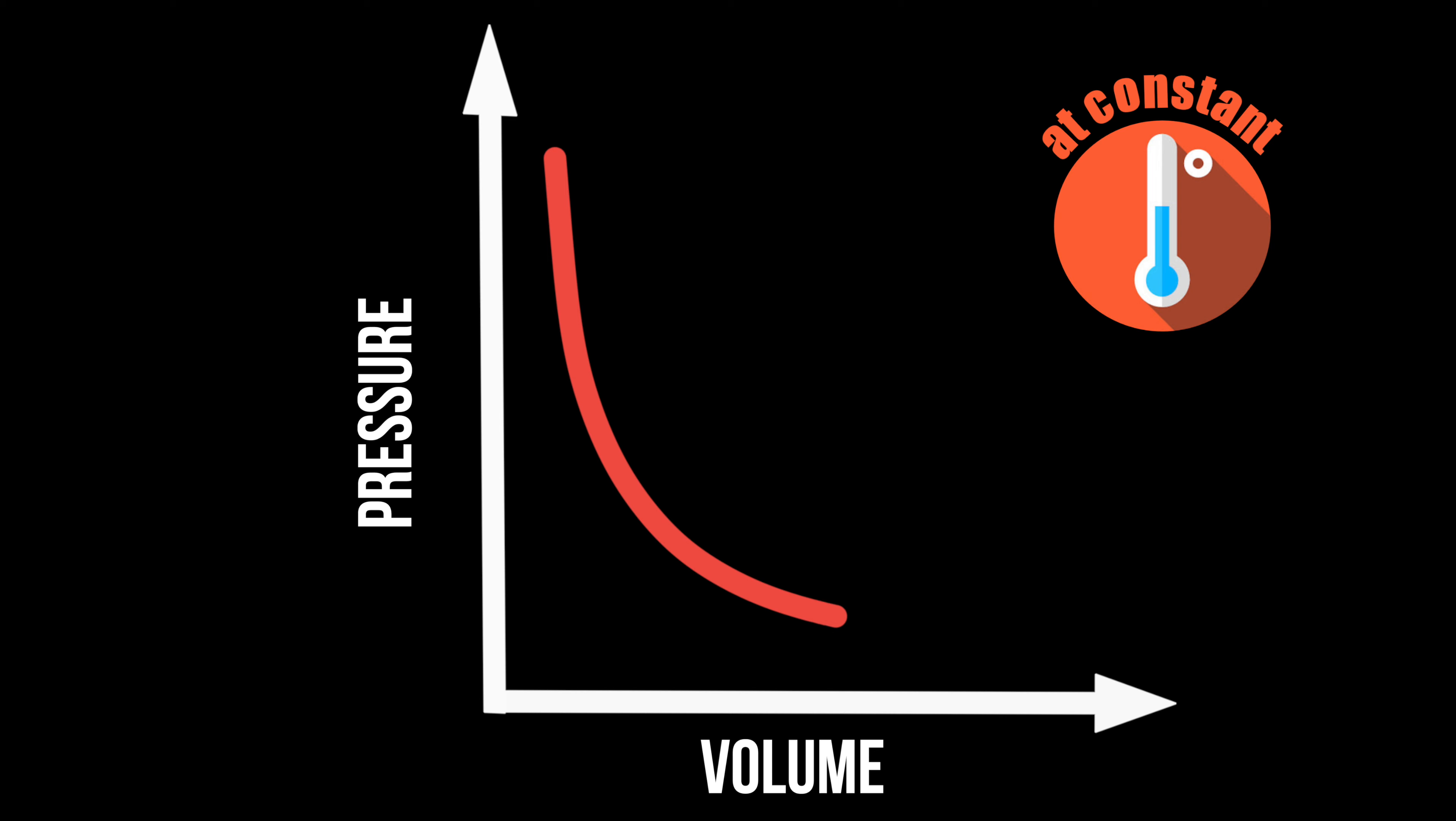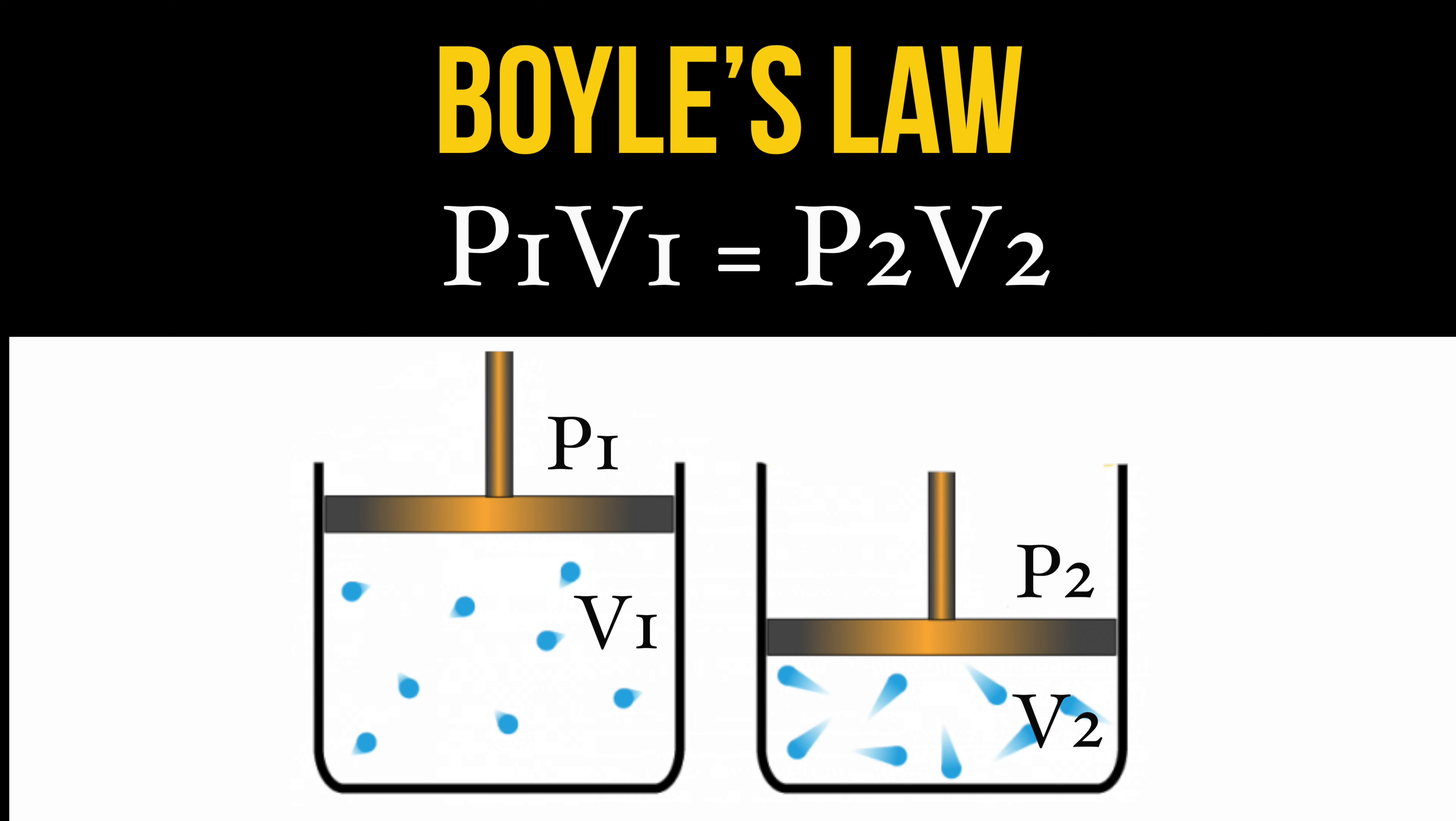In 1662, a physicist Robert Boyle discovered that at a constant temperature, the volume of gas is inversely proportional to its pressure. What that means is that the product of the pressure and the volume of gas is a constant. The Boyle's Law can be expressed as follows.